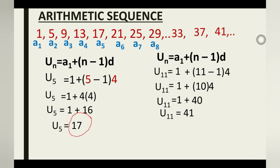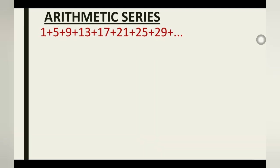With this formula you can find any term in an arithmetic sequence. Now let's work on arithmetic series. A series is just a set of numbers in a sequence that have been added together — we replace the commas with addition signs. Proving that a series is arithmetic is the same as proving a sequence is arithmetic: we find a common difference. For example, 13 − 9 = 4, 29 − 25 = 4, 25 − 21 = 4. The common difference is constant throughout.